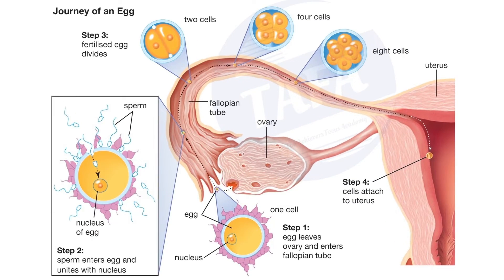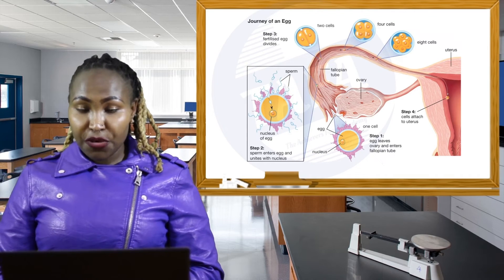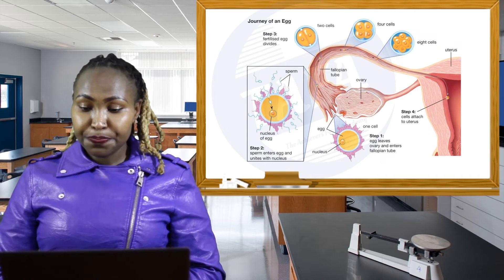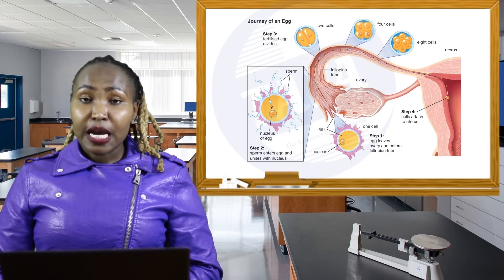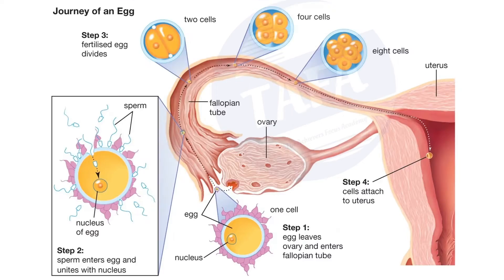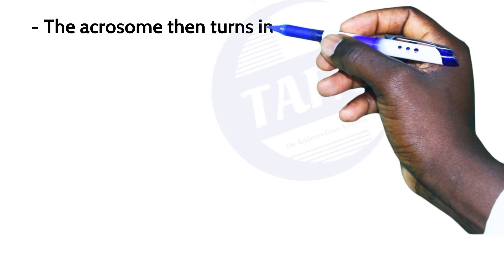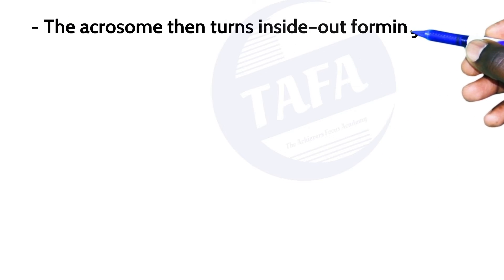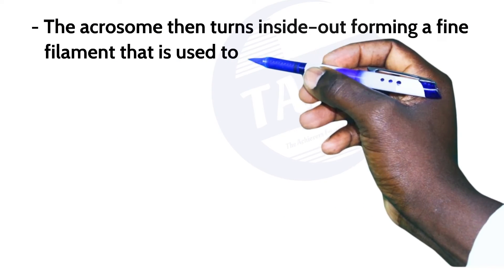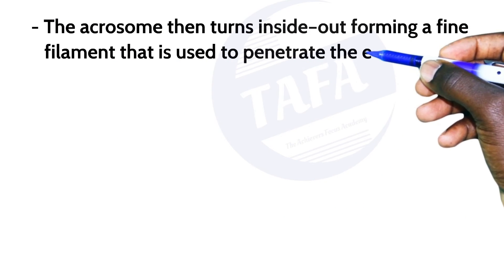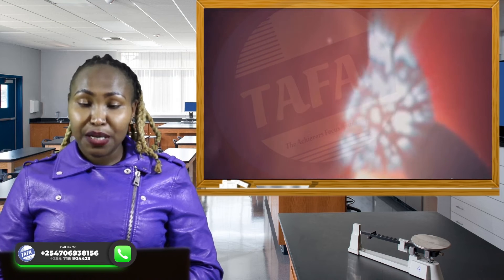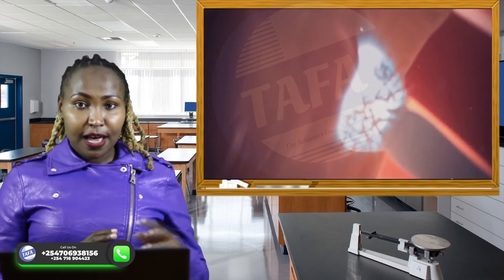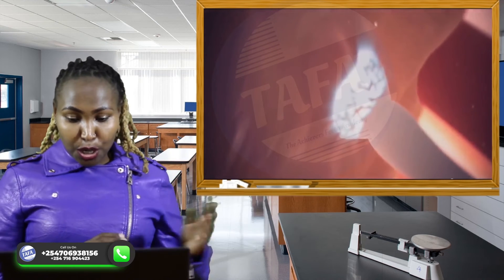The diagram below illustrates the process of fertilization. We can see that the acrosome turns inside out to form a fine filament that is used to penetrate the egg.